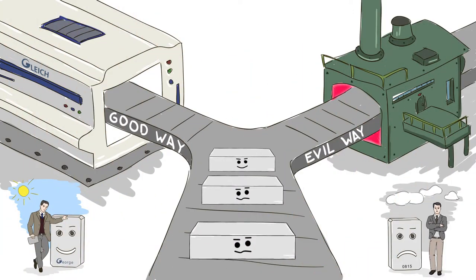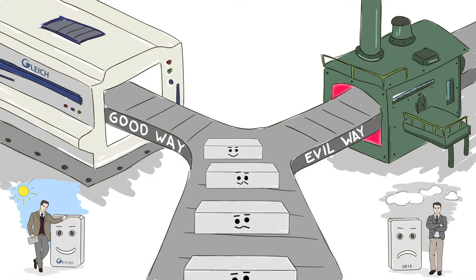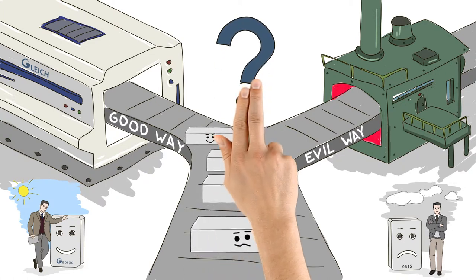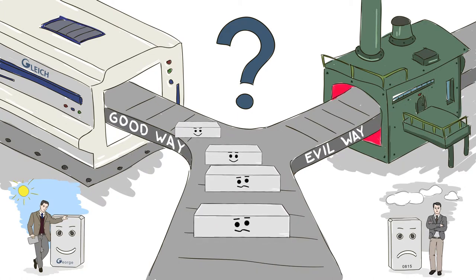The fact is, the problems Peter has due to rolled plates, Julian does not have thanks to using cast plates. Why, you may wonder? The answer is simple.